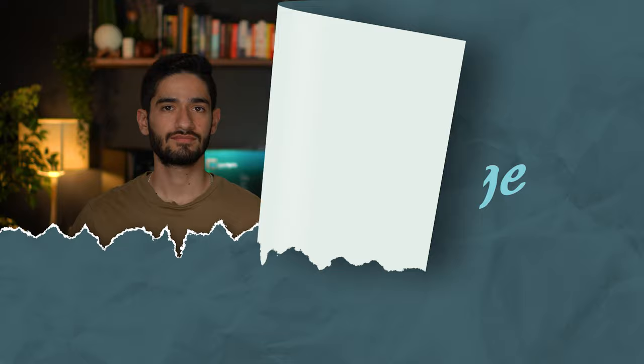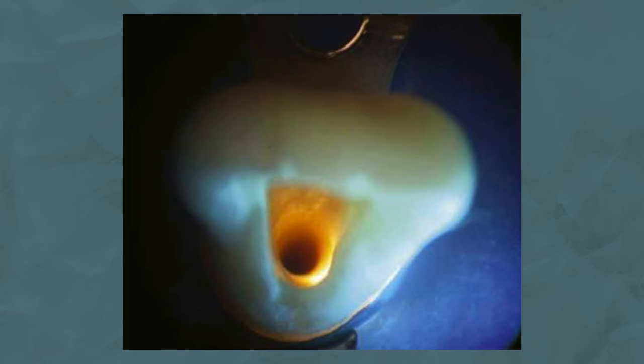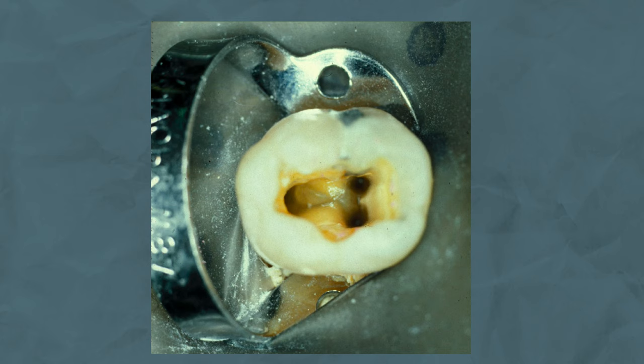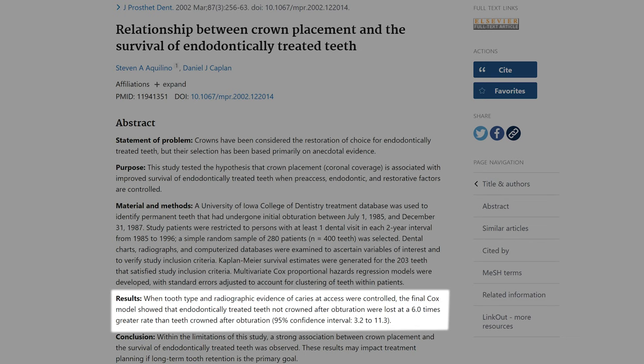So do all root-treated teeth need cuspal coverage? For anterior teeth, if the only tooth tissue lost is that of the access cavity or the access cavity and some proximal tissue, a composite restoration would probably be sufficient. However, if there's an access cavity plus multiple or very large restorations, then a full coverage crown would be needed. For pre-molar teeth, there's a gray area — pause the screen for guidance. For molars, you should almost always provide cuspal coverage. The one exception is a very conservative access where the isthmus width is less than a third of the tooth tissue between the cusps. Any more than a third lost, or if a ridge or cusp is missing, cuspal coverage is required. Research shows that root-treated posterior teeth are six times more likely to be lost without cuspal coverage.